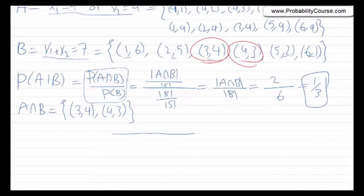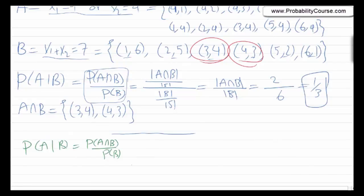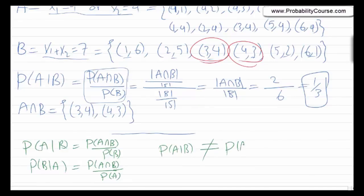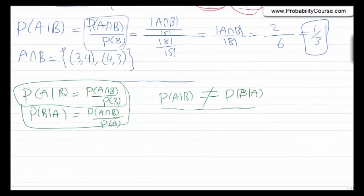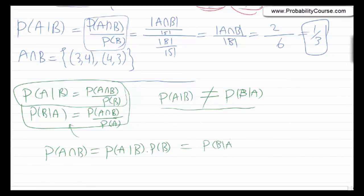I want to end this video with one useful formula. From the conditional probability formula, P(B|A) = P(A∩B) / P(A). Note that P(A|B) is not in general equal to P(B|A) — these are different quantities with different formulas.